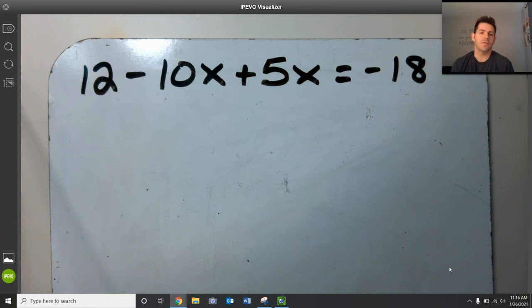When we started off doing two-step equations, there were two terms on one side, one term on another side. Here I have three terms on the left side of this equation. So I want to try to combine like terms as much as possible prior to getting to a two-step equation. Let's just simplify things. So let's go ahead and do that.